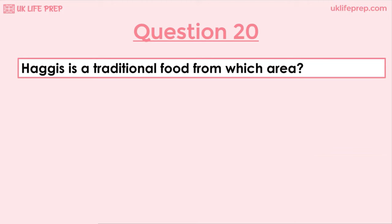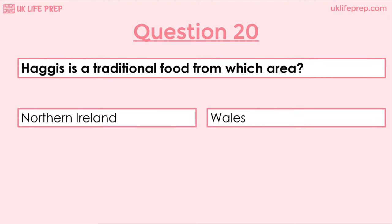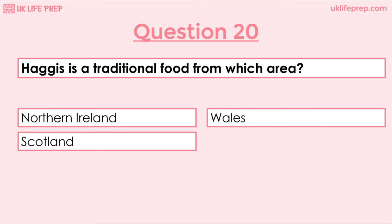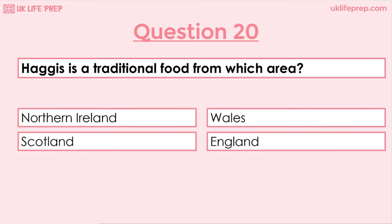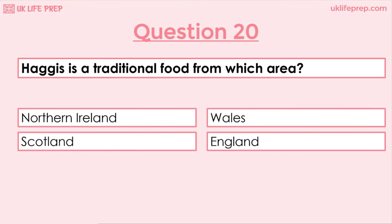Question 20: Haggis is a traditional food from which area? Northern Ireland, Wales, Scotland or England? The correct answer is Scotland.